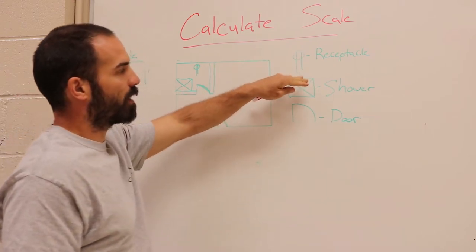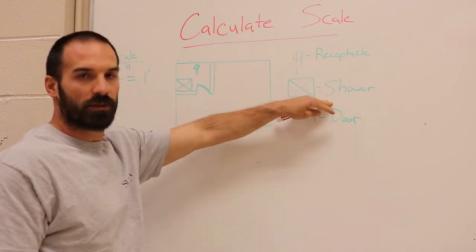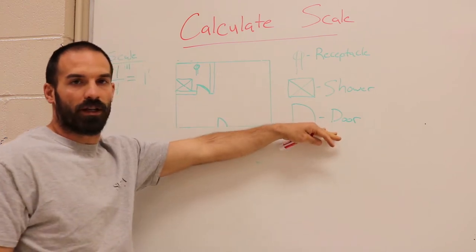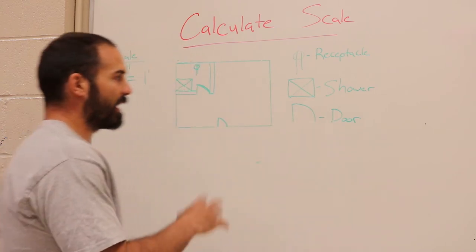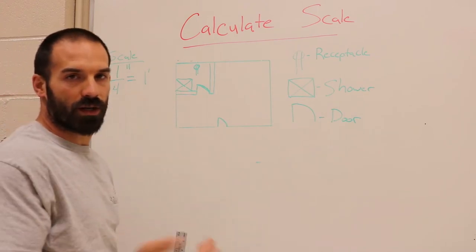And the reason why I have all of these is because all trades use scale. An electrician is going to need to know where a receptacle lands on a wall. A plumber is going to need to know where to land his pipes for a shower. And a carpenter is going to need to know where to frame the opening for the door. The next thing you need to know is what the actual scale is. In this scenario we're going to use a quarter inch equals a foot.